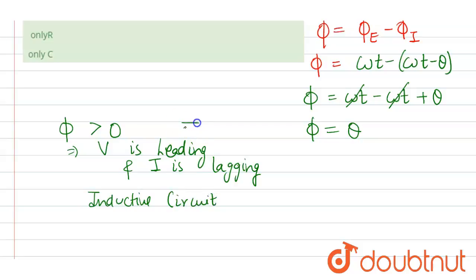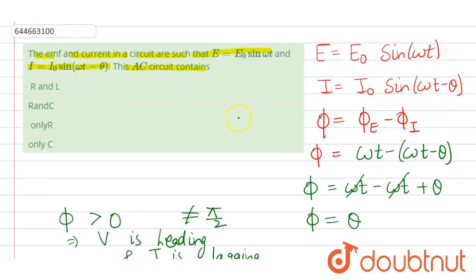But if we see the phase angle is not equal to pi by 2, that means there is an inductor in the circuit as well as a resistor in the circuit. So this means that the correct option of this question will be R and L.